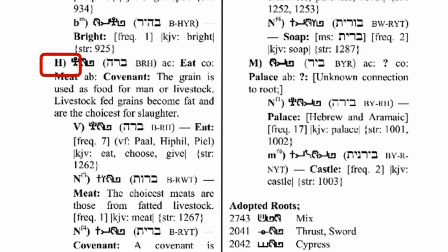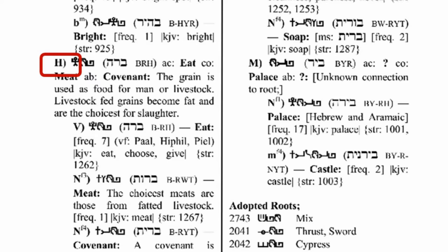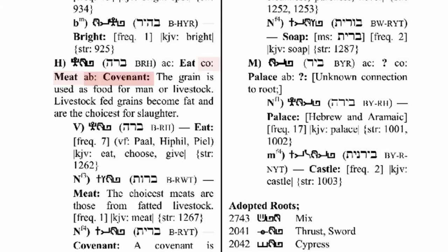Now we want to go up to the child root that this word is derived out of, the root we previously identified by the letter H. Each root word is spelled out in ancient Hebrew and modern Hebrew and a transliteration. Then you are provided three translations of this root: the first is the action of the root, to eat; a concrete definition, meat; and an abstract definition, covenant. This is followed by a definition of this root. The grain is used as food for man or livestock. Livestock fed grains become fat and are the choicest for the slaughter.